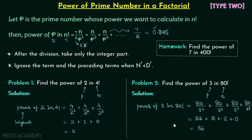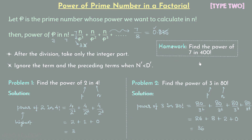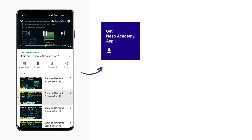That is all for problem number 2. For the homework problem, you are required to find the highest power of prime number 7 in 400 factorial. Try to solve this problem and once you have your answer, post it in the comment section. I will end this lecture here — see you in the next one.